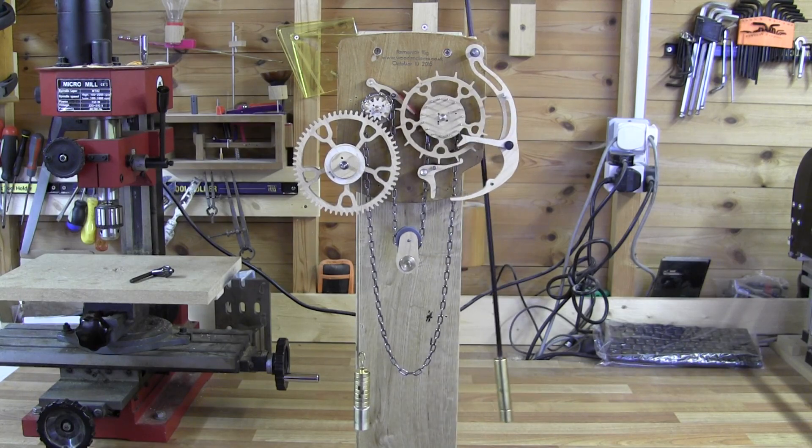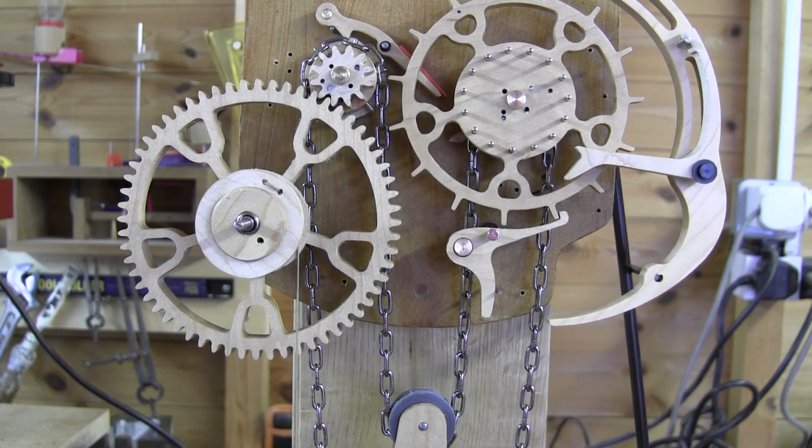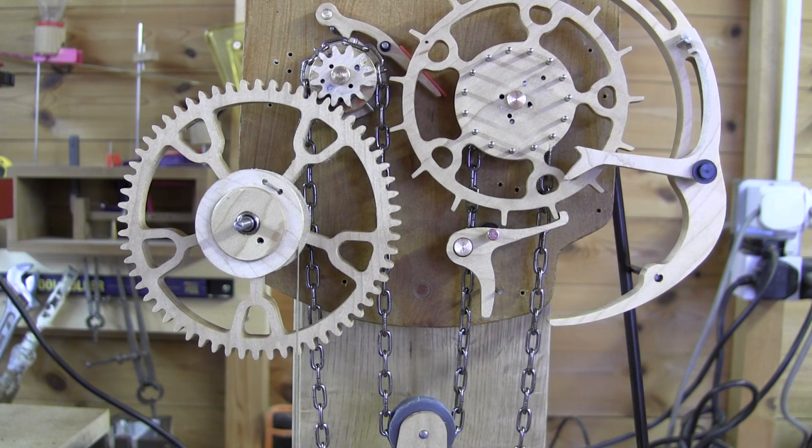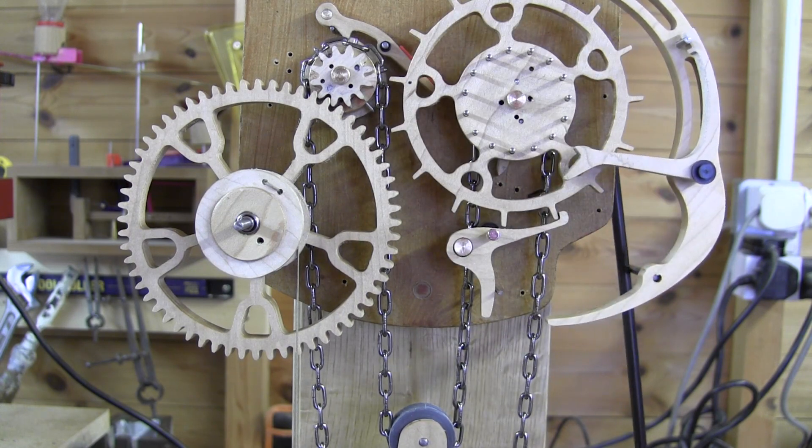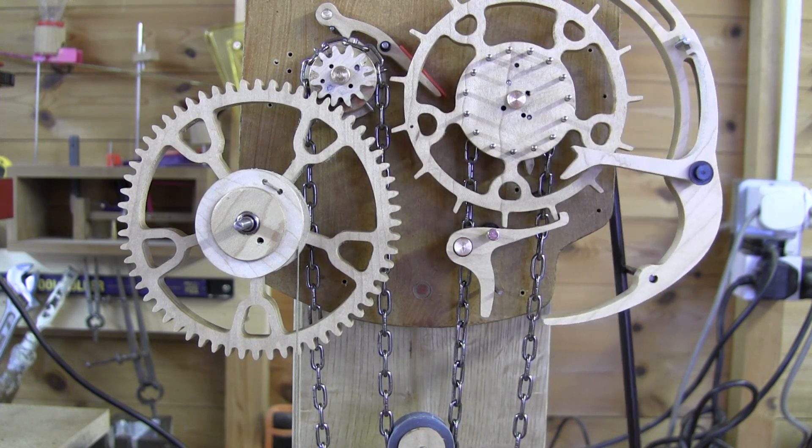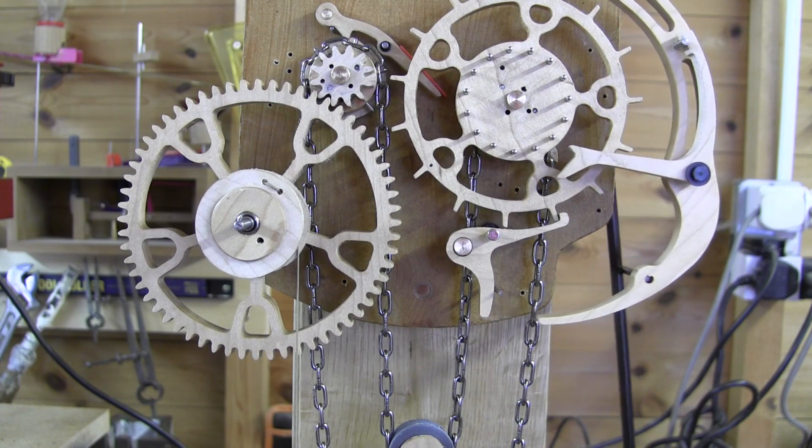The chain used here has 33 links per foot and perhaps is a little coarse in its movement, so I may use a finer 42 links per foot chain in the actual clock.